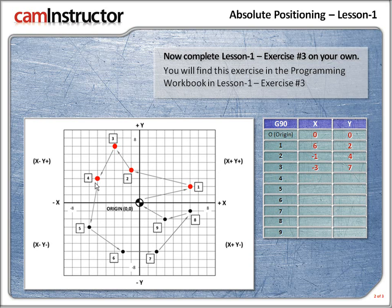Next up, position 4. Position 4 is to the left of the y-axis, so it's going to be a negative amount. How much? 1, 2, 3, 4, 5. So the x is negative 5. Now for position 4, the y — let's count the squares up: 1, 2, 3. Positive 3. So for position 4, x minus 5 and y plus 3.